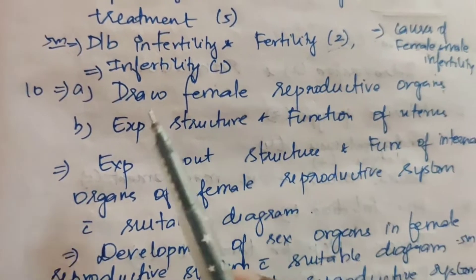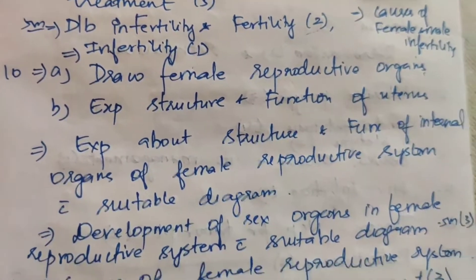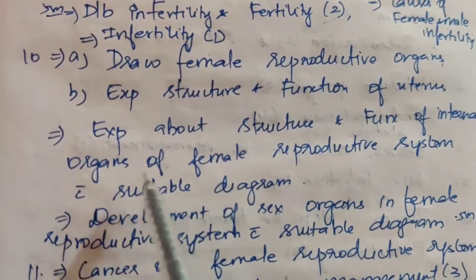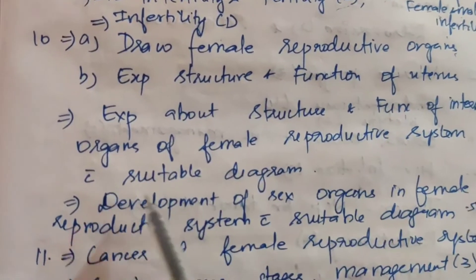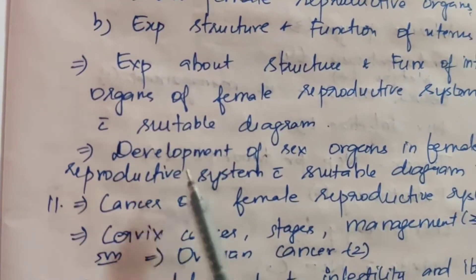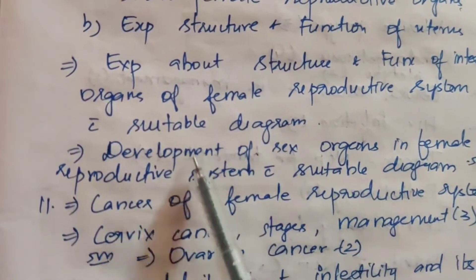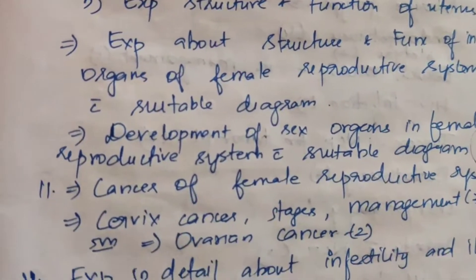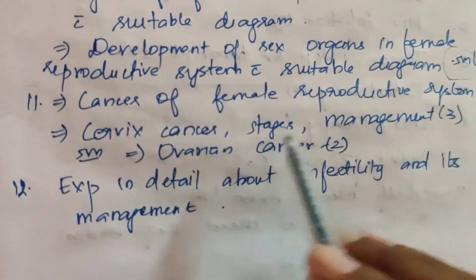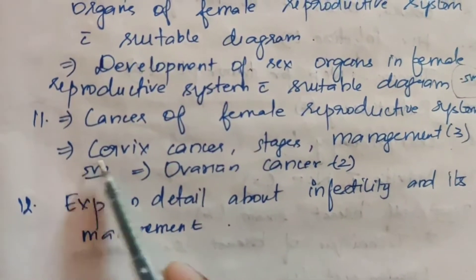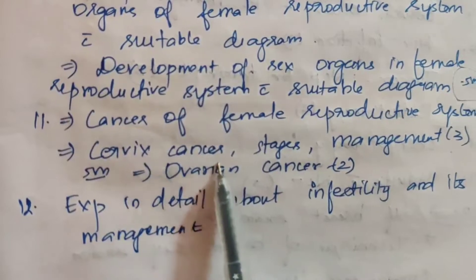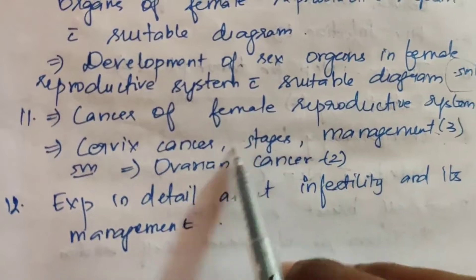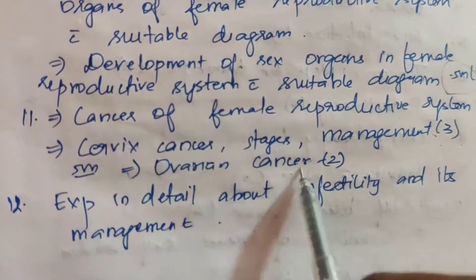Tenth one: draw female reproductive organs and explain the structure. Explain about the structure of the female reproductive system with a suitable diagram — three times. Eleventh one: cancer of the female reproductive system — cervix cancer stages and management — three times. Cervical cancer also appeared three times in 5 marks. Ovarian cancer — two times.